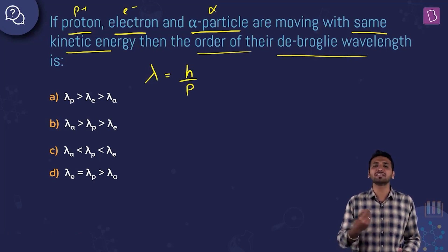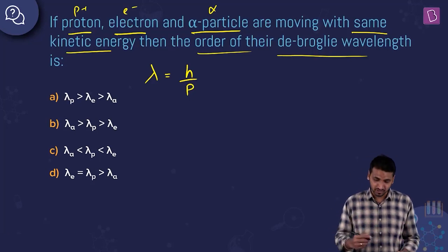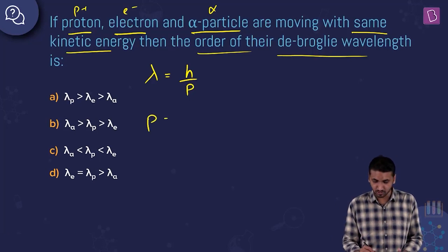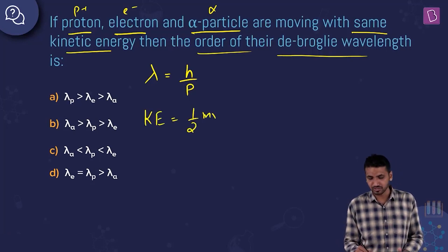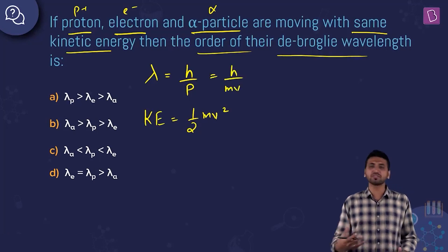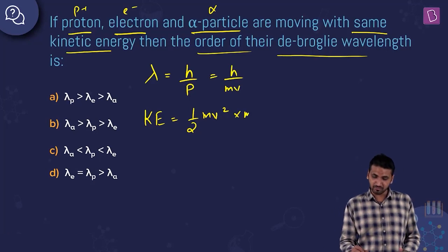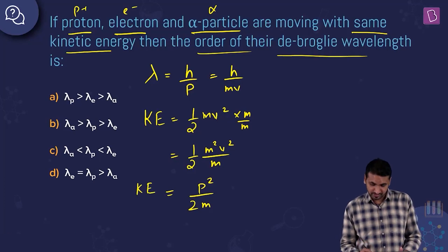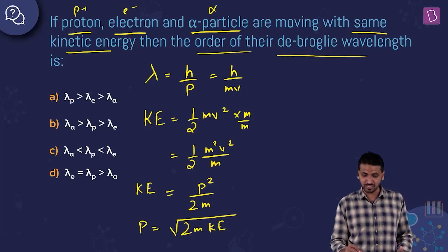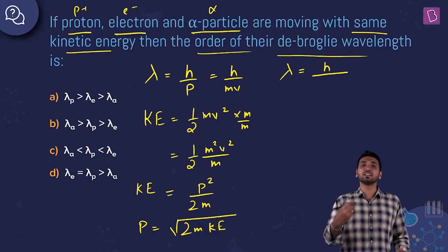We need to express the formula in terms of kinetic energy. Kinetic energy KE = ½mv². Multiplying and dividing appropriately, p² = m²v², so KE = p²/2m, giving momentum p = √(2mKE). Substituting into the De Broglie equation: λ = h / √(2m·KE).